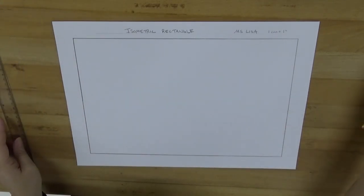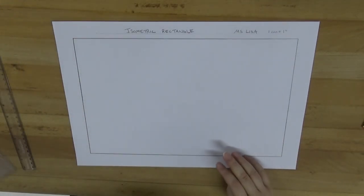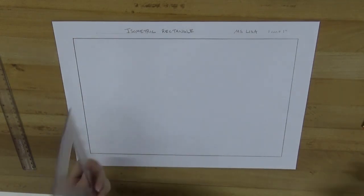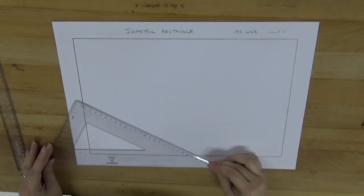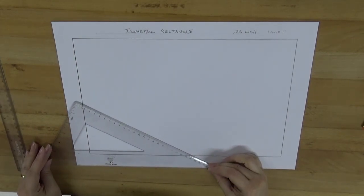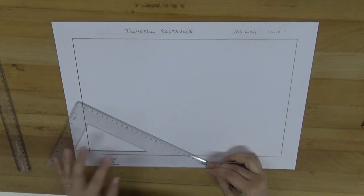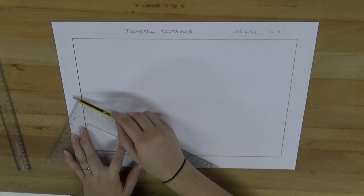Okay, we're gonna make an isometric rectangle this time. So in this case it's a lot like the square but one side is different obviously. So find your starting point wherever that may be. In your rough drafts it should probably be a little bit bigger, maybe towards the center.